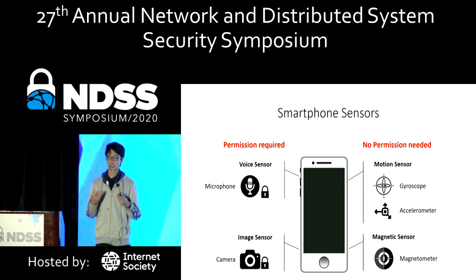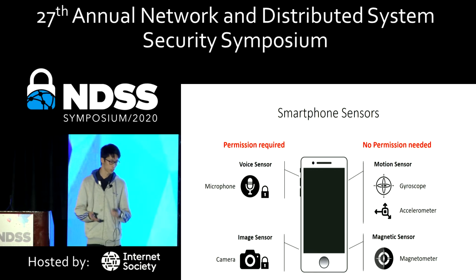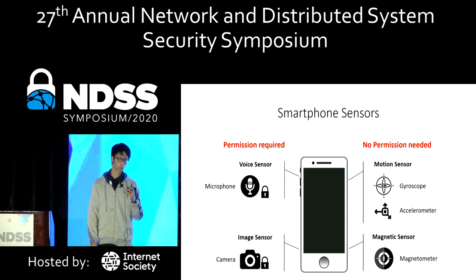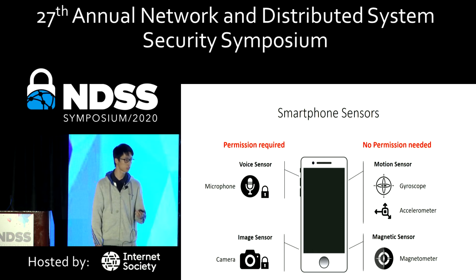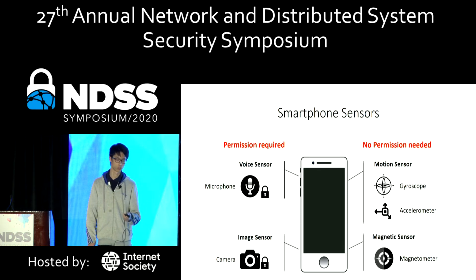Currently, smartphones are equipped with a set of comprehensive sensors. Some sensors are considered low risk, and any app can access their data without any permission — for example, the motion sensors or the magnetic sensors. Some sensors are considered high risk and apps need permission to access their data, for example the microphone, since it can capture human speech voice.